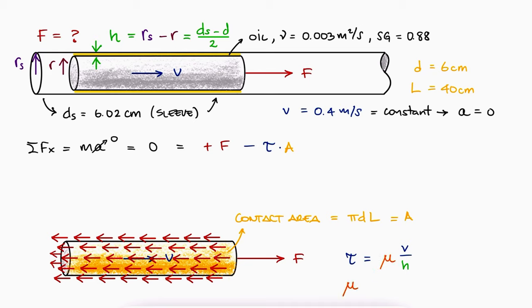The last variable we need is the dynamic viscosity mu. Since the dynamic viscosity is equal to the kinematic viscosity times the density, and the density is the specific gravity times the density of water, we have everything we need to calculate the force.